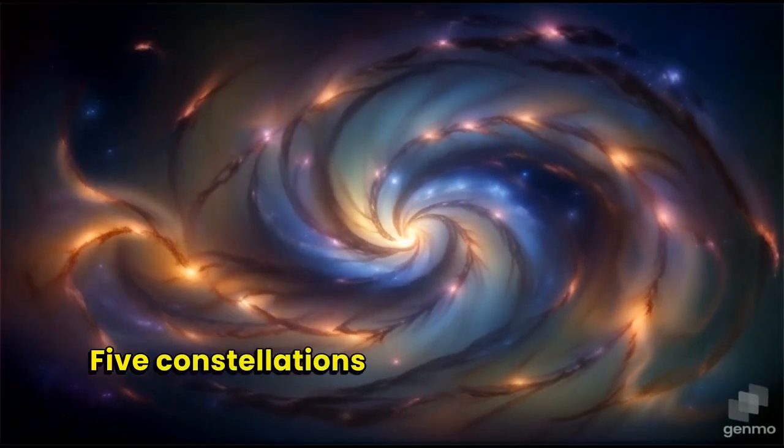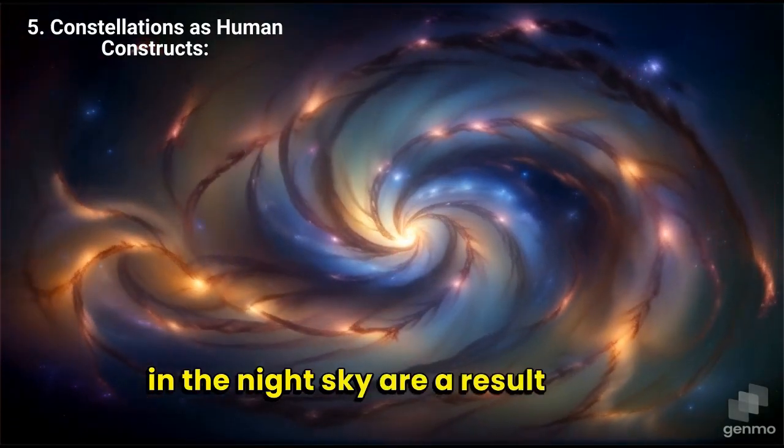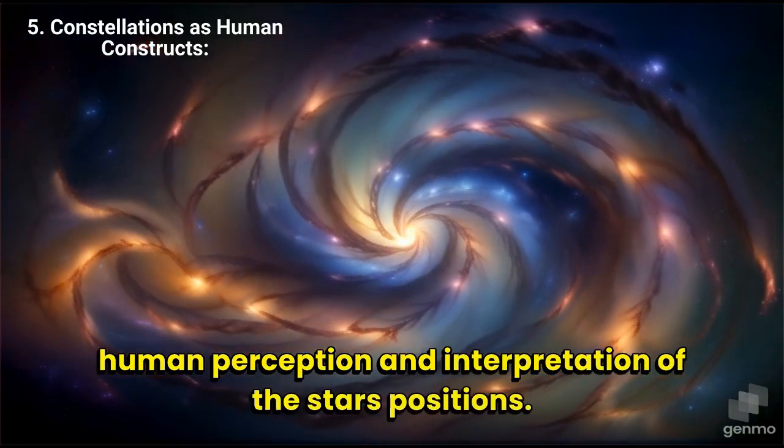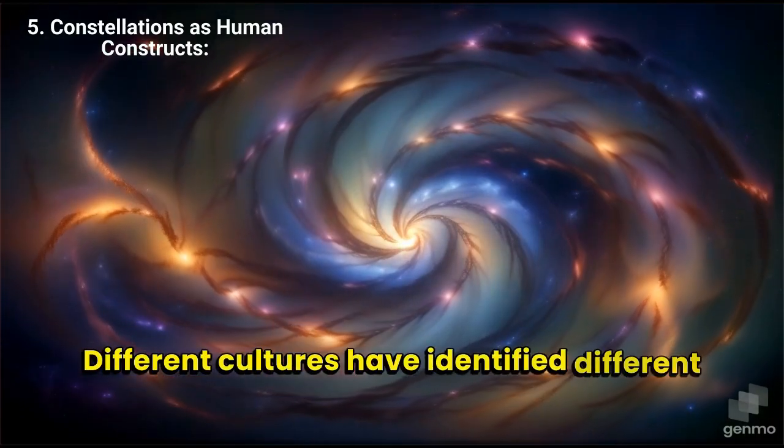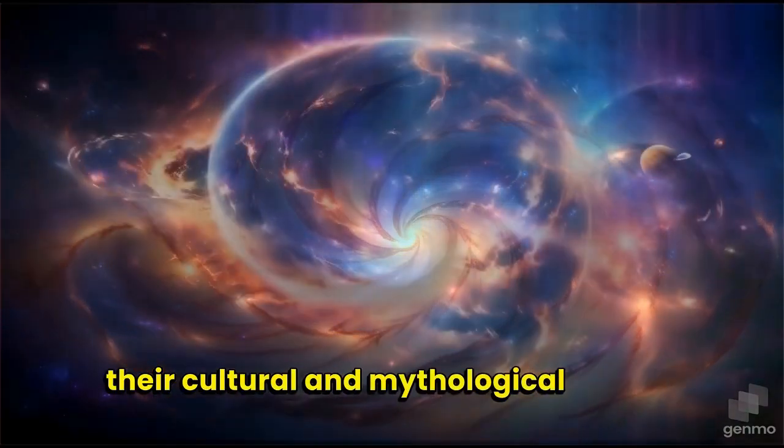5. Constellations as human constructs. The patterns we see in the night sky are a result of our human perception and interpretation of the stars' positions. Different cultures have identified different constellations and assigned different meanings to them based on their cultural and mythological beliefs.